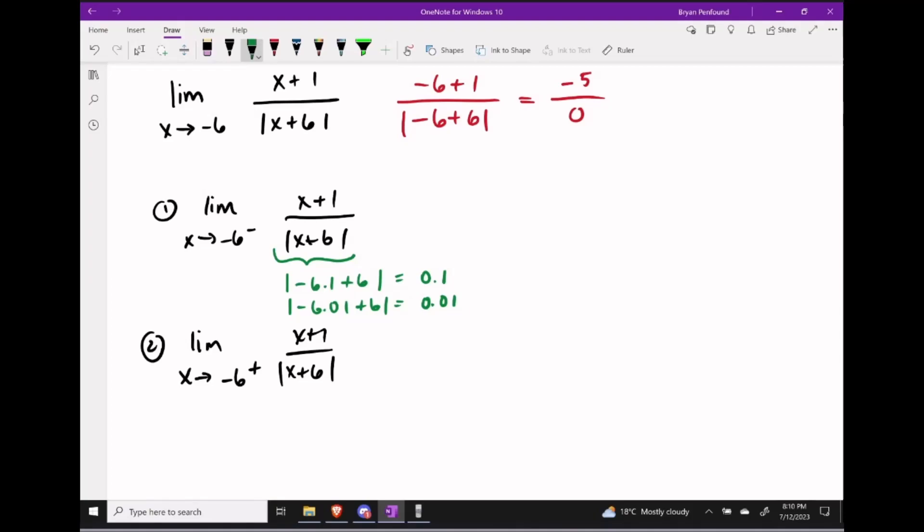So this means that the denominator's always going to be a positive number that's really close to 0. But what about the numerator? Well, the numerator's going to be about negative 6 plus 1, so the numerator's always going to be hovering around negative 5.